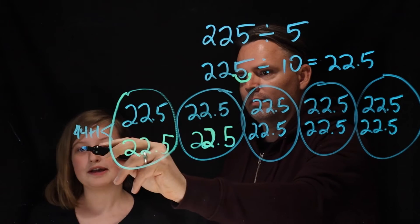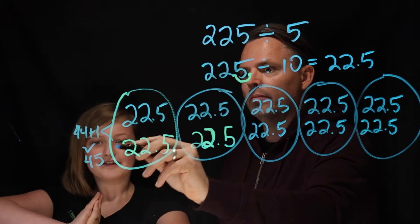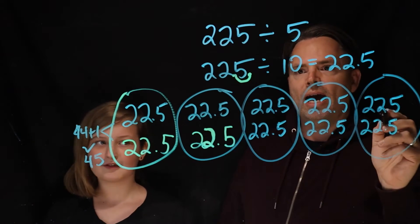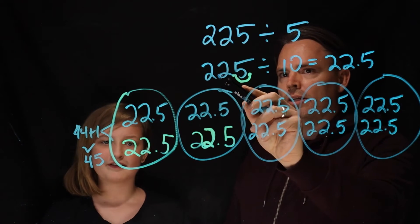Well, 0.5 plus 0.5 equals 1. Okay. And 22 plus 22 equals 44. So now if we add 44 plus 1, it would equal 45. Nice.